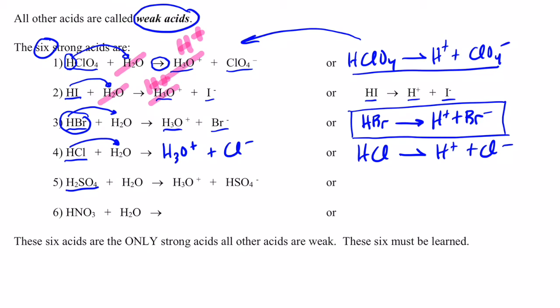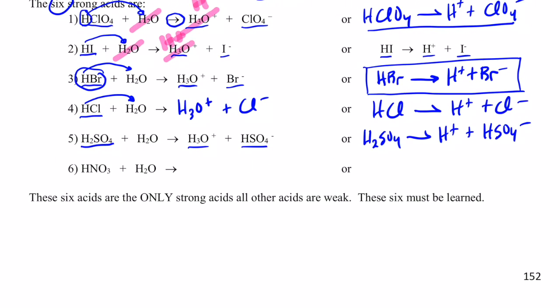H2SO4, sulfuric acid. When added to water will form hydronium and hydrogen sulfate ions. Now the abbreviated way to write that would be H2SO4 becomes H pluses and HSO4 negative ions. All right, you do number six on your own, nitric acid, the last of your six strong acids. Write both the long version products and go ahead and write the short version for me. Pause the video and try it now.